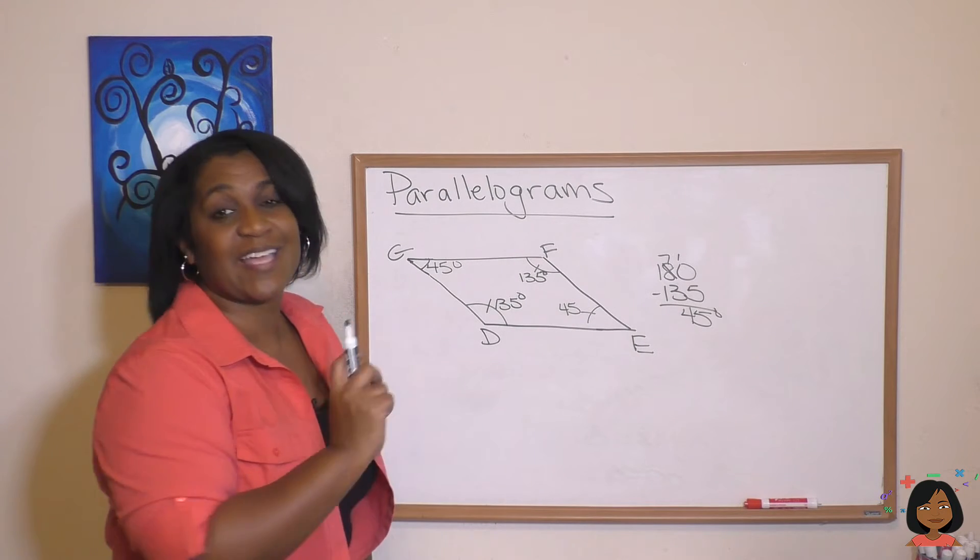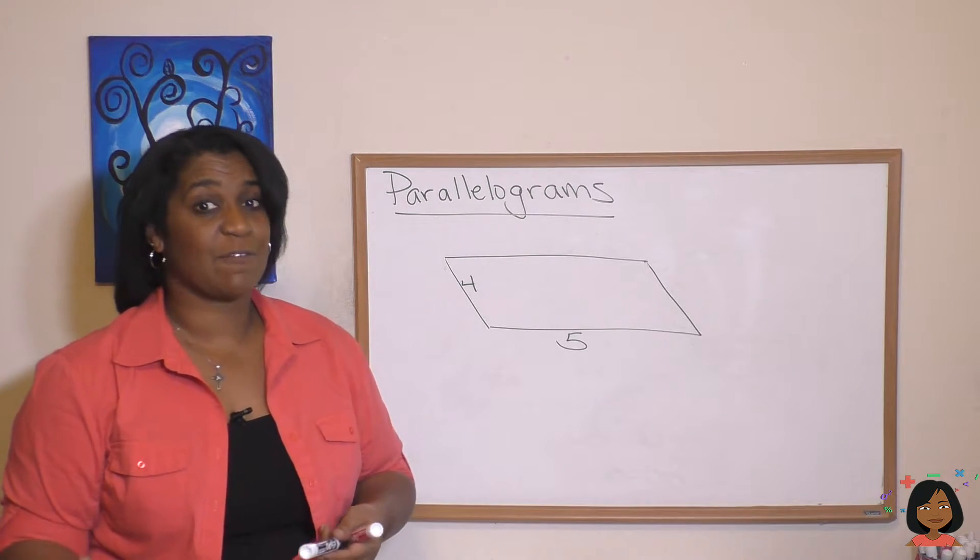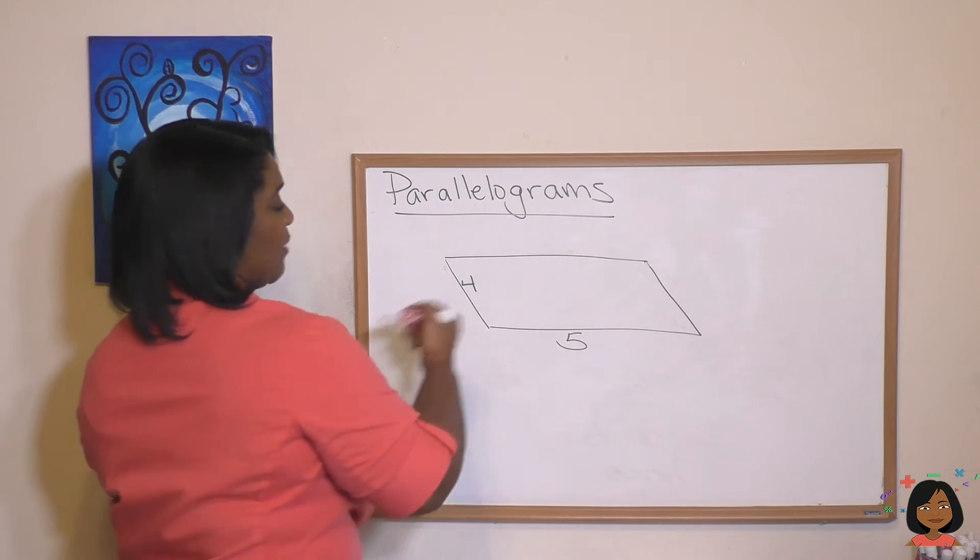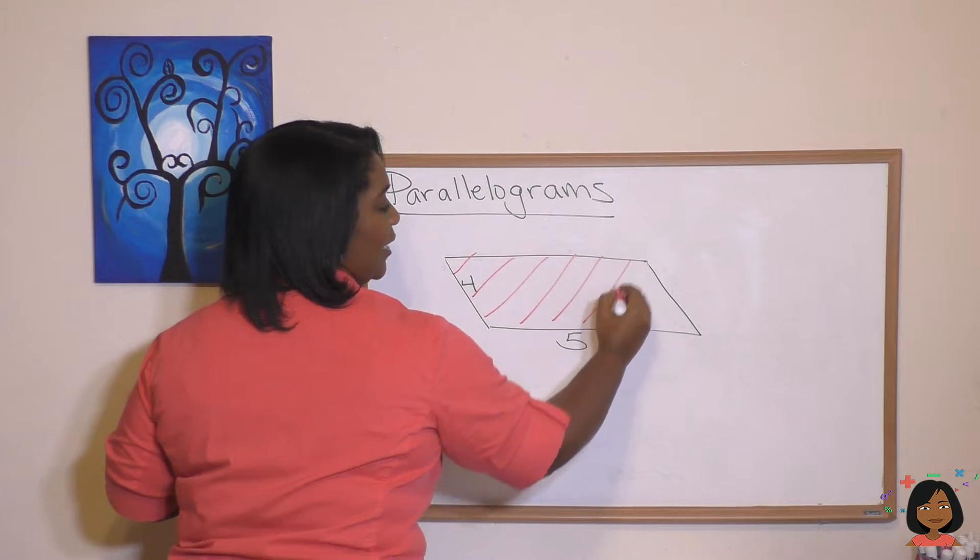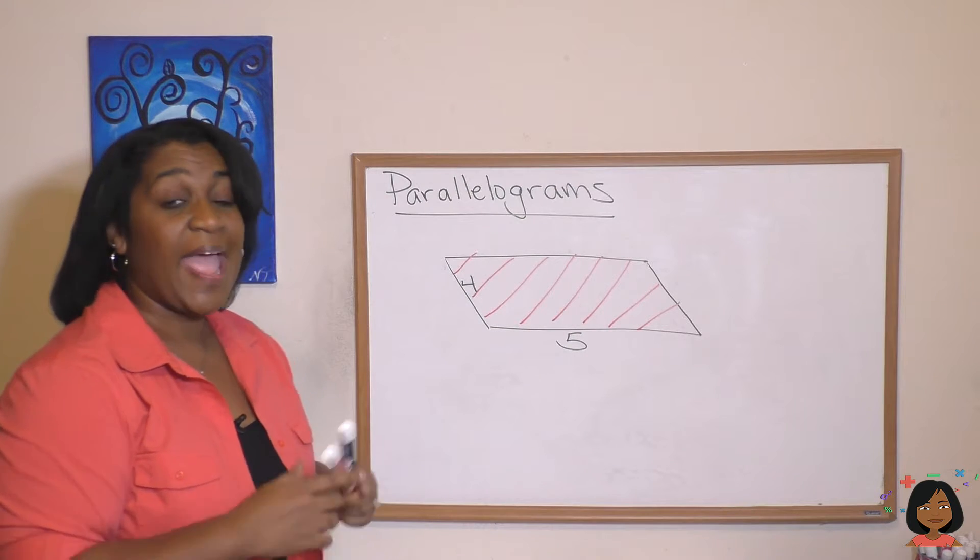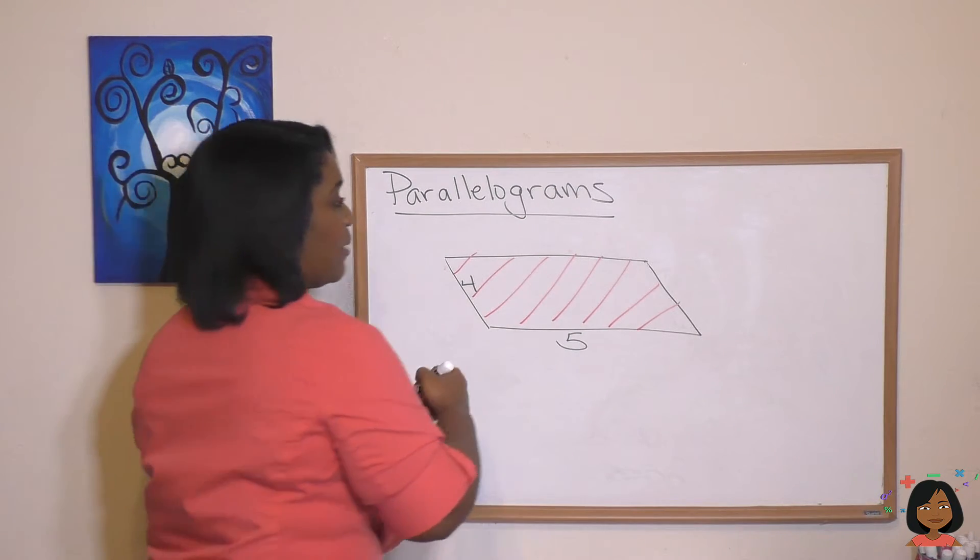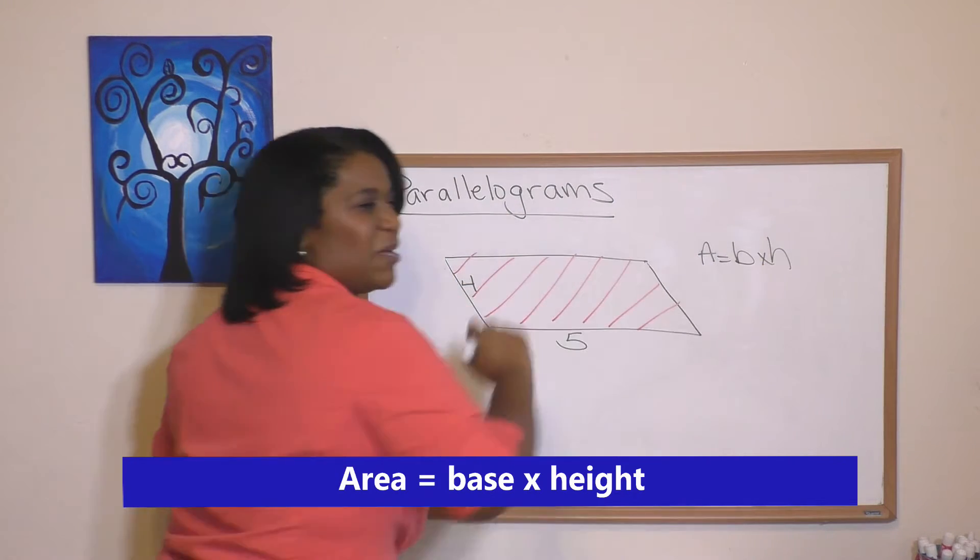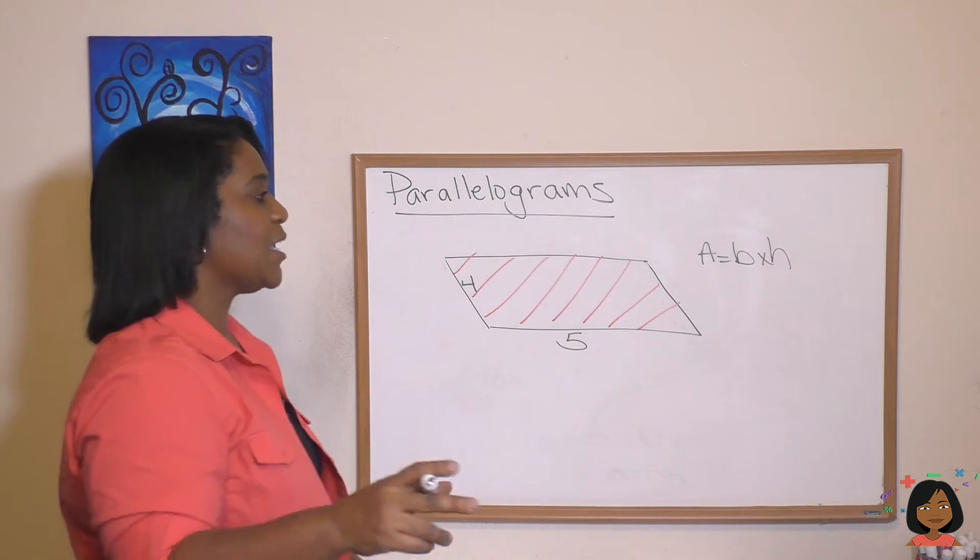Now let's talk about the area of a parallelogram. Now remember when we're talking about area, we're talking about how do we find the space that's inside the lines of the parallelogram. That's what we're looking for. And I'm going to give you right away the formula for a parallelogram: the area is base times height. But it's important for me to talk to you about what base and height represents.